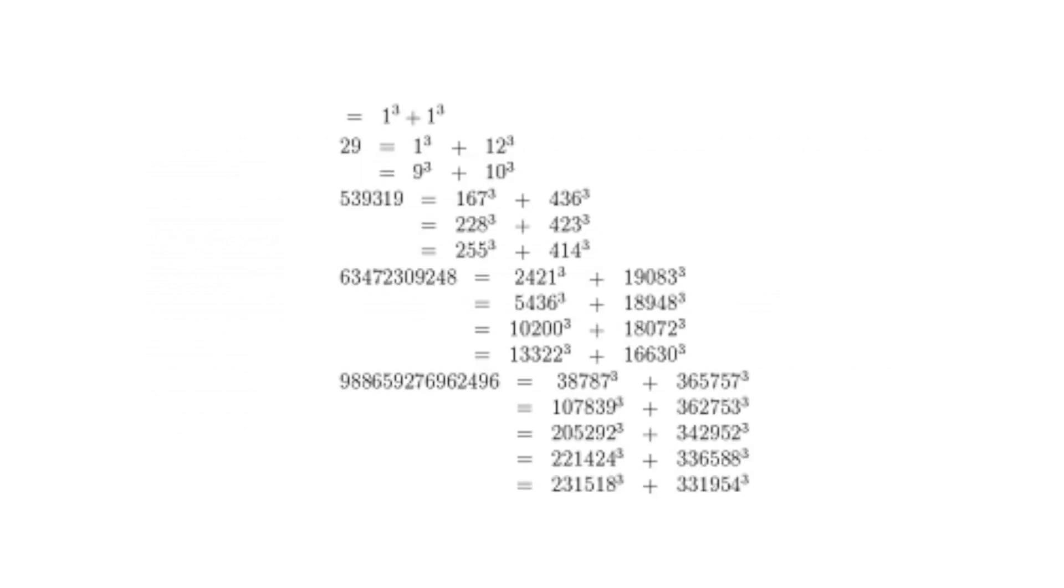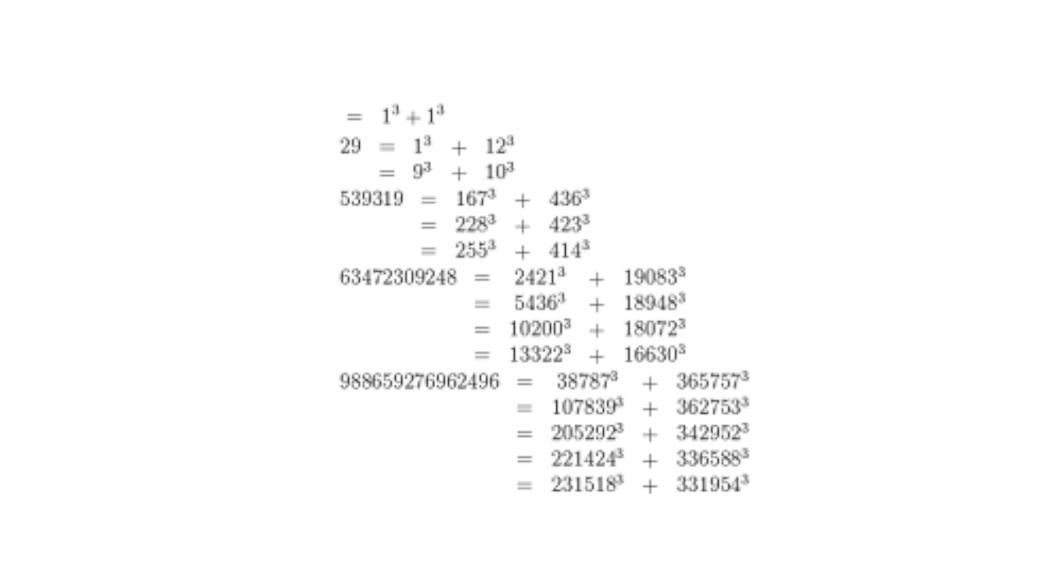This led to the creation of the idea of a taxi cab number. The nth taxi cab number is the smallest number that can be the sum of two distinct cubes in n distinct ways. Two is the first taxi cab number, as it's the smallest number that's the sum of two cubes in one way, namely 1³ plus 1³.